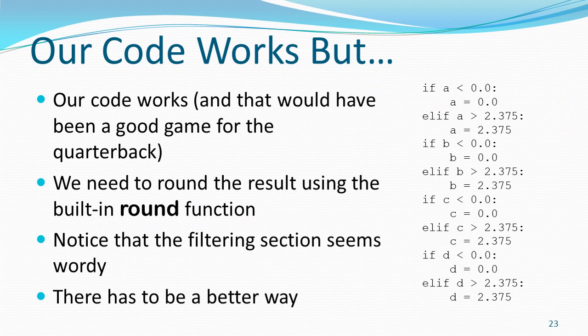Our code works, and 110 would be a good game for a quarterback. But we need to round things — quarterback ratings are usually reported to the nearest tenth. Also, the filtering section just looks bad; it's wordy and doesn't look like good use of our coding ability. There's got to be a better way, and of course with Python there is.